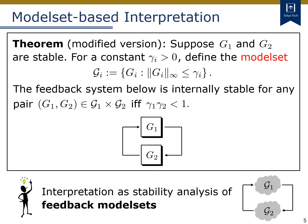Next, let's see a model-set-based interpretation of the small-gain theorem. A modified version of the statement is given here. Suppose that both G1 and G2 are stable. For a positive constant gamma-i, define the model set script Gi as the set of all Gi such that its norm is less than gamma-i. Then, the feedback system of G1 and G2 is internally stable for any pair G1 and G2 whose norms are bounded like this, if and only if gamma-1 times gamma-2 is strictly less than 1. The small-gain theorem can thus be interpreted as the stability analysis of the feedback of model sets, script G1 and G2, which are specified by their bounded gains.